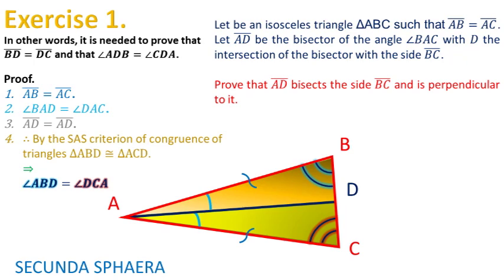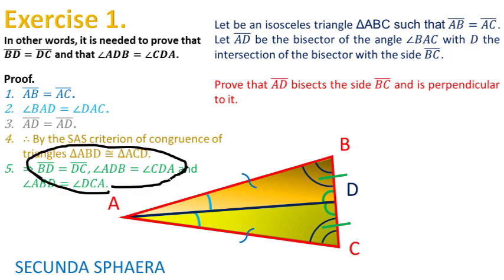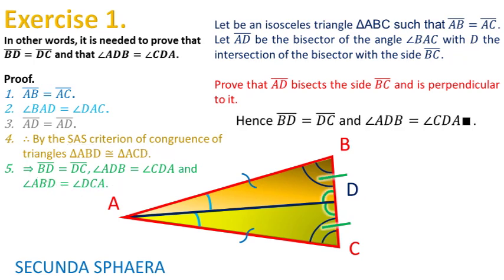This shows the large amount of information that the criterion of congruence of triangles can give. For this problem, not all the information is relevant, as the first two equalities are the objective of the problem. Overall, it has been inferred that the segments BD and DC are equal, and that the angles ADB and CDA are equal. It may be your time to ponder about this problem and this solution. If you found another solution or feel confused about some step, please comment.